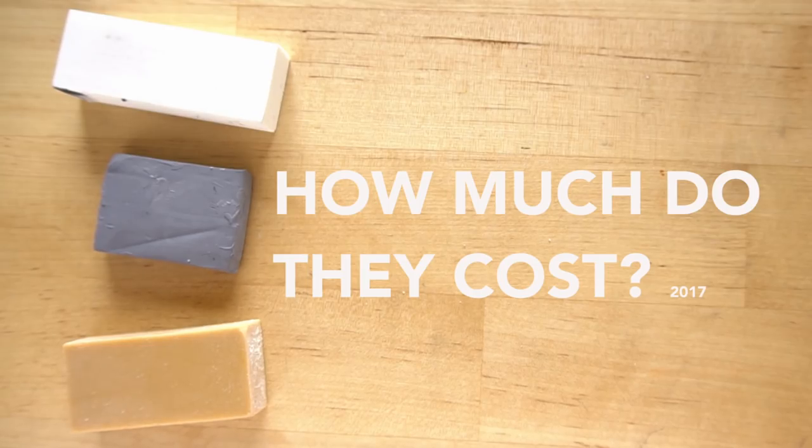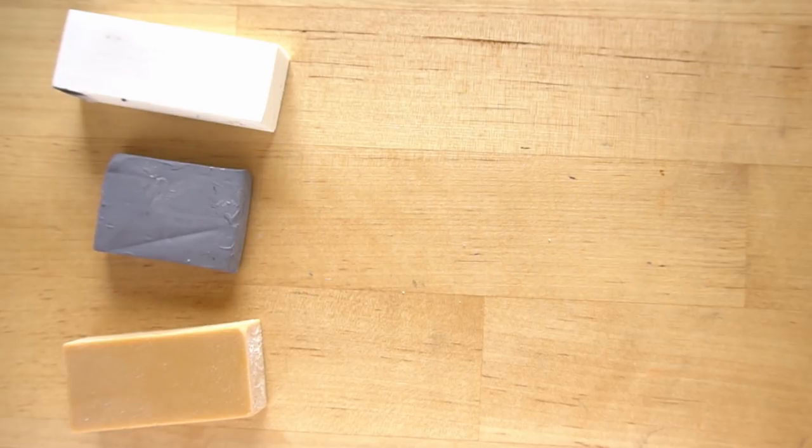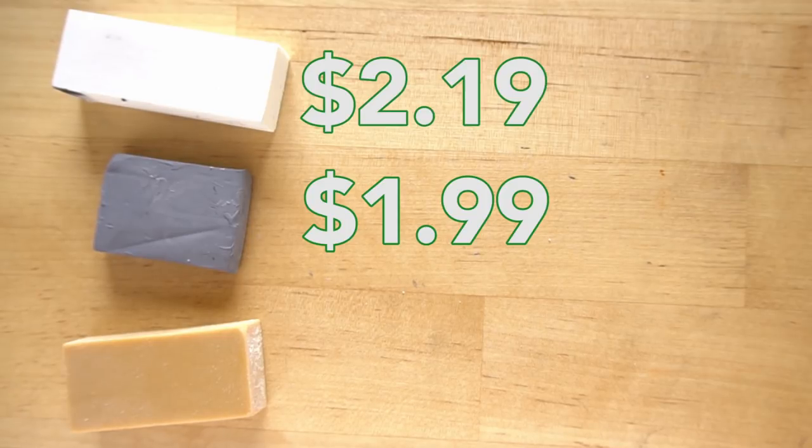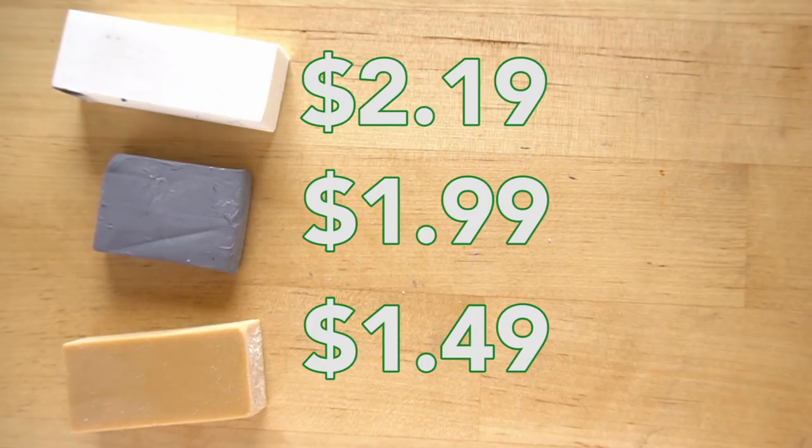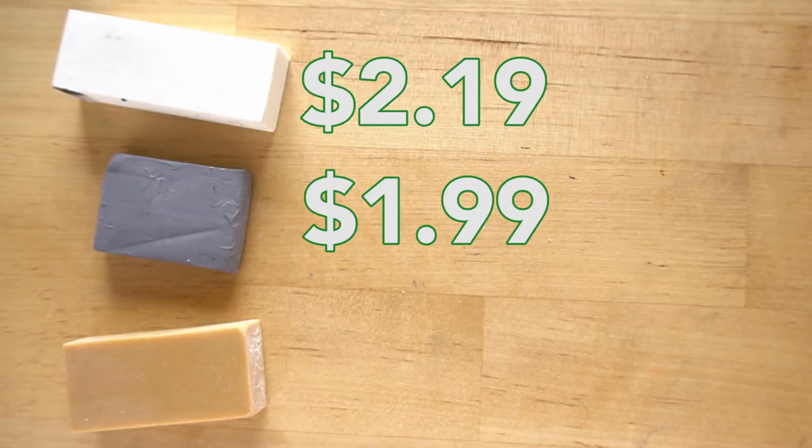The price of these, at least at my craft store, and this is in the year 2017 in the United States, so these prices will change. The kneaded eraser was $1.99. The white eraser was $2.19. And the gum eraser was $1.49. So there's not a huge range in price. They're pretty similar but the cheapest is the gum eraser. And it works great.